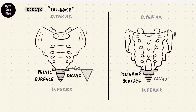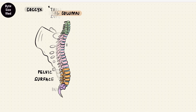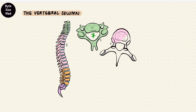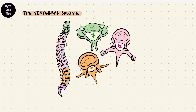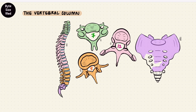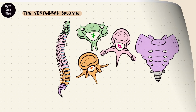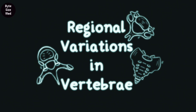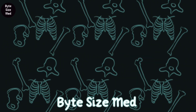And with that we've reached the end of the vertebral column: seven cervical, 12 thoracic, five lumbar vertebrae, the sacrum, and the coccyx. And that's some stuff about how they all differ. I hope this video was helpful.